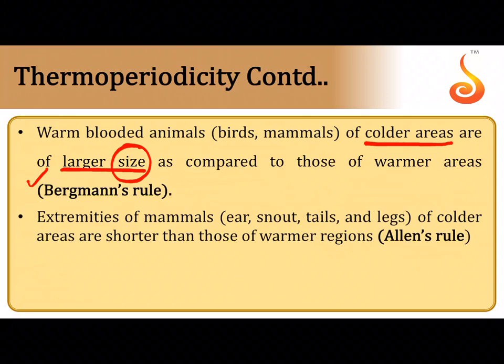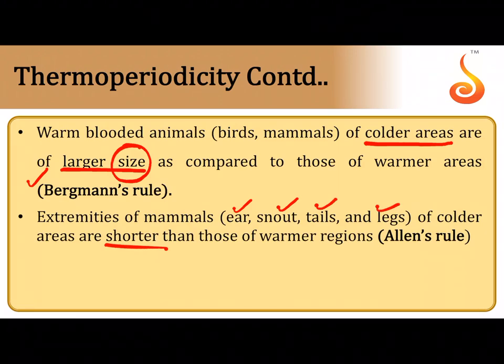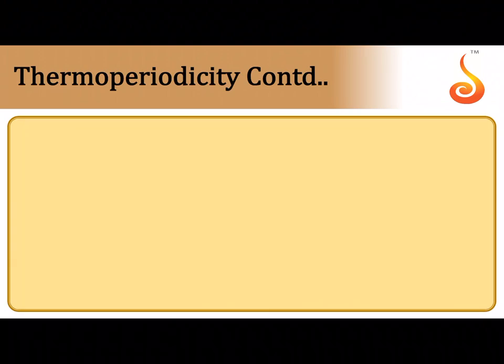Animals in polar regions have very small or shorter peripheral parts — ears, snout, tails, and legs — to prevent or minimize heat loss, preserving body heat. If they had longer extremities like ears or snout, they would lose a lot of heat to the surroundings. This rule is referred to as Allen's rule.